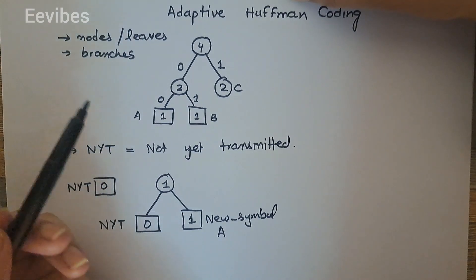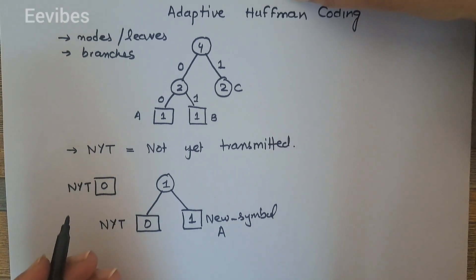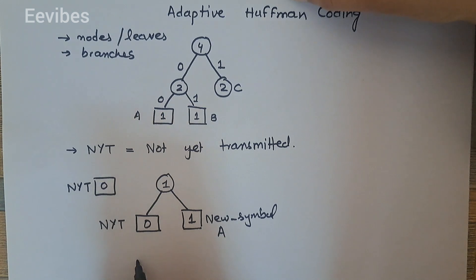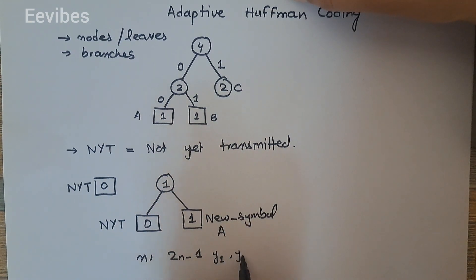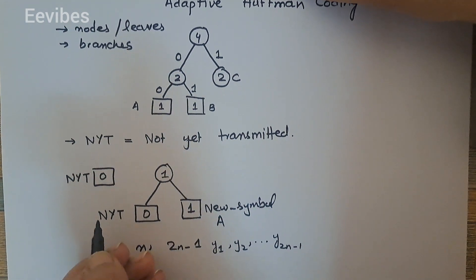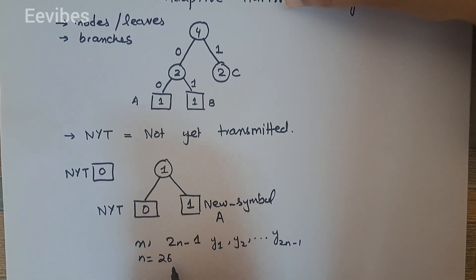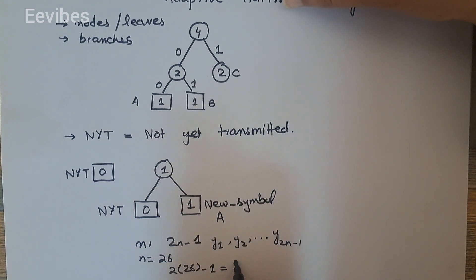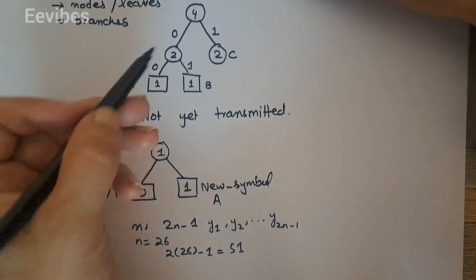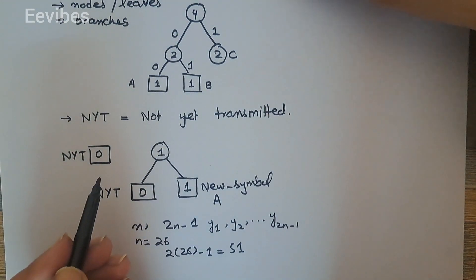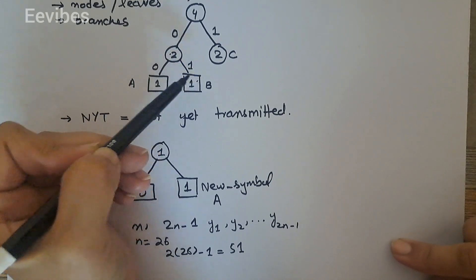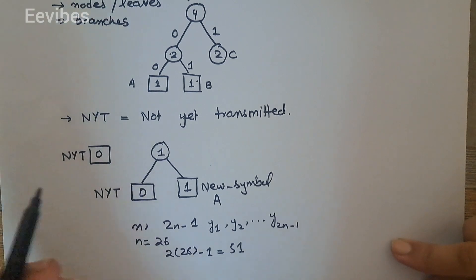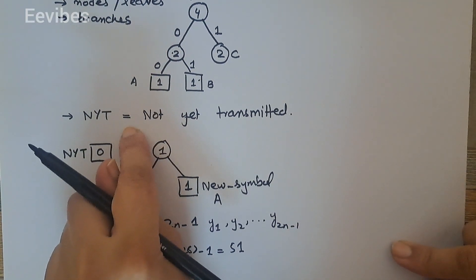The second thing is the node number — we have to assign node numbers. If we have an alphabet of size n, then 2n minus 1 internal and external nodes can be numbered from y1 up to y of 2n minus 1. Since in the case of alphabets n equals 26, we can have 2 times 26 minus 1 equals 51, so 51 node numbers can be assigned starting from the top down to the NYT node. We assign node numbers starting from the top, moving right then left, until we reach the NYT node — hence the NYT node always gets the lowest node number, and the top node gets the highest.